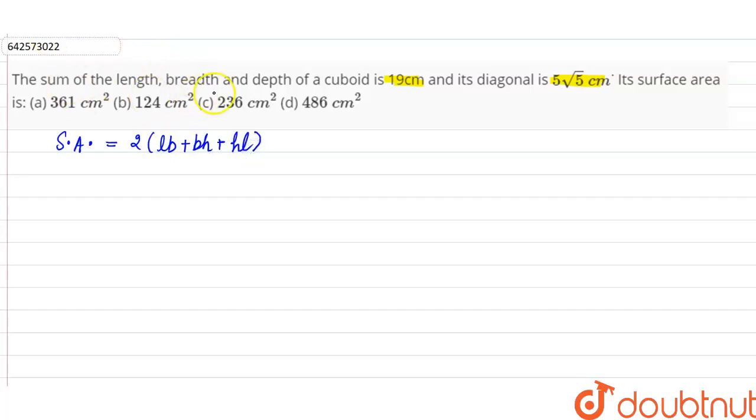And it is given that the sum of length, breadth and height of cuboid is 19 cm. So let's say this is equation one.